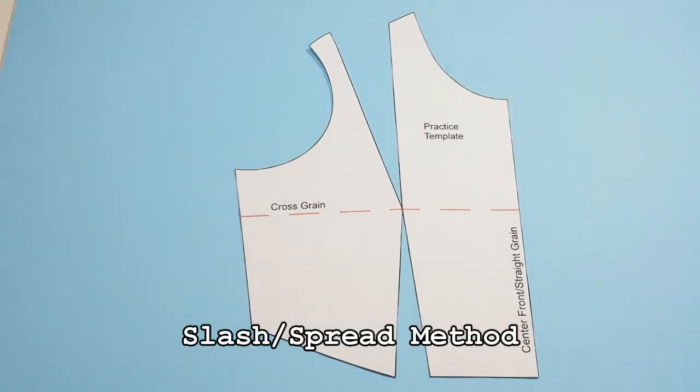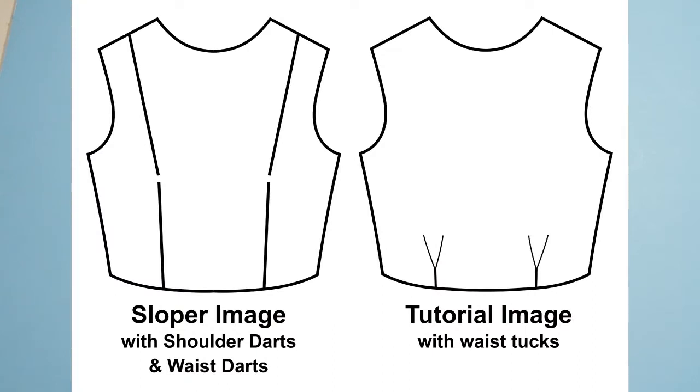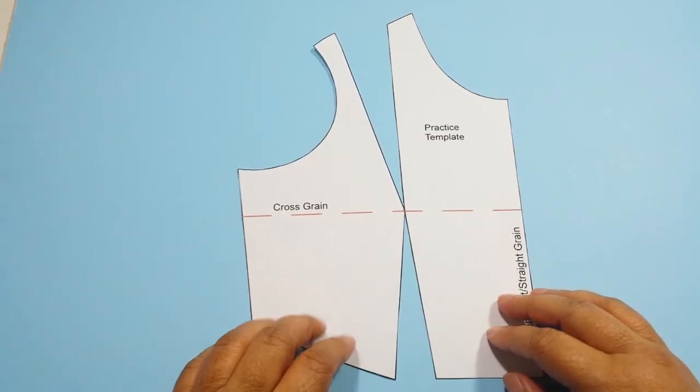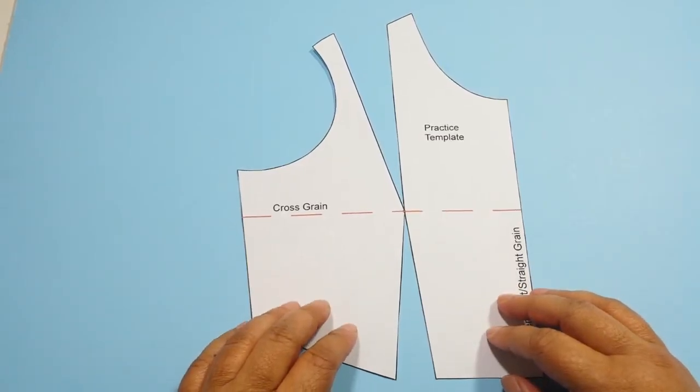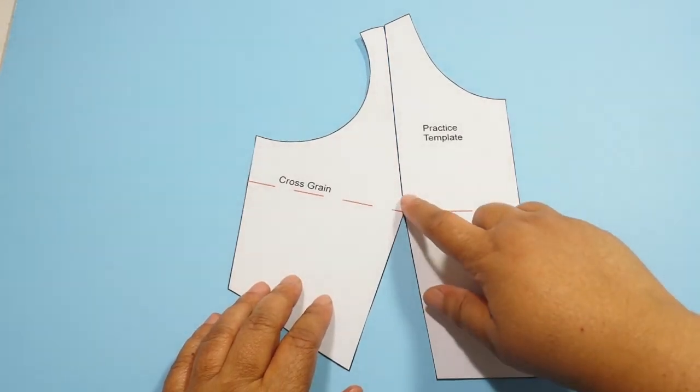So to start with the Slash and Spread method, make sure you have both your darts cut out. This allows you to easily close either dart. For this example, we're getting rid of our shoulder dart by combining it with our waist dart. When we compare our sloper image with what we want to create, you see that there are no shoulder darts. So all we have to do to achieve this is to close our shoulder dart and tape it down.